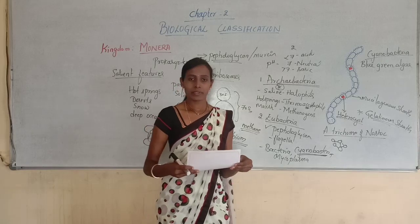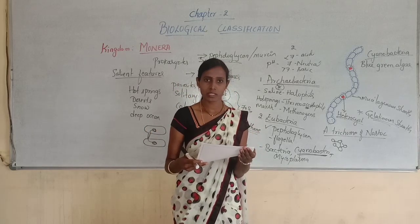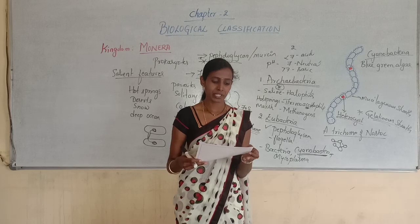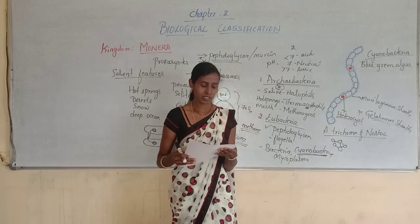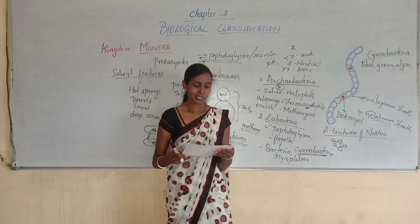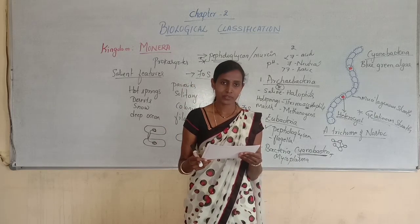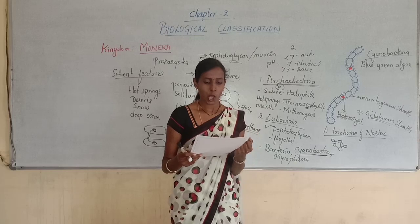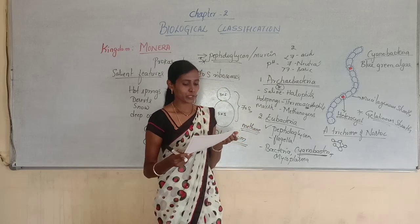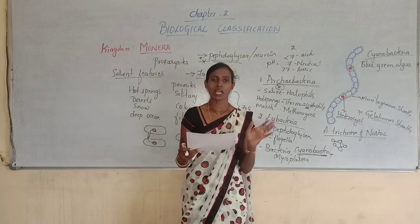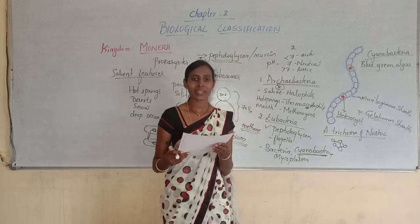Now let's discuss objective questions. Question 16: Most abundant microorganisms — option A bacteria, B virus, C amoeba, D peregrine. The answer is bacteria, as they are the most abundant organisms.